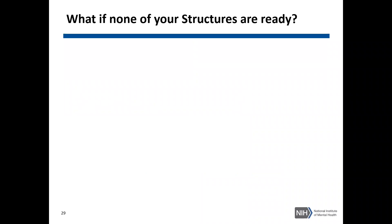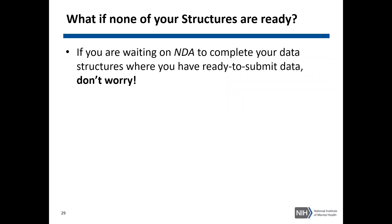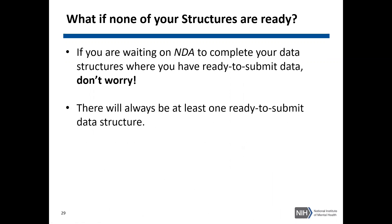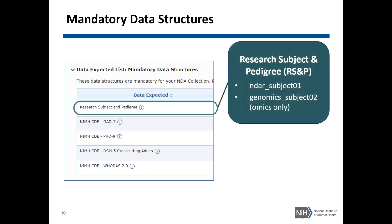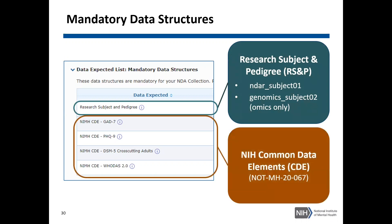If none of your structures are ready — as in you see 'structure not yet defined' for structures you have collected data for — don't worry, we do have a workaround. Please note that there will always be at least one ready-to-submit data structure in your NDA collection, which are your mandatory data structures. These are pre-populated by NDA when your NDA collection is created. All NDA collections will have the research subject and pedigree data structure. If you're submitting omics data, please submit for the genomic subject 02 data structure; if not, please use the NDA subject 01. You may also see NIMH CDE or common data element data structures, which are added to NDA collections where the grant is subject to guide notice NOT-MH-20-067. If you have questions regarding the requirement to submit for these data structures, please email your program officer.